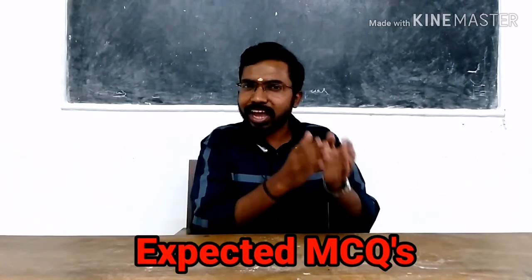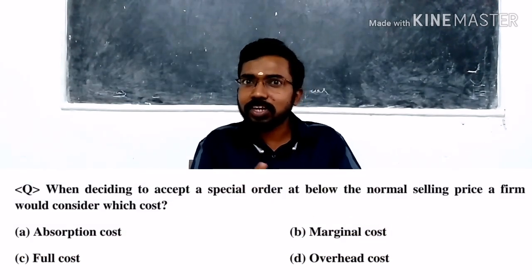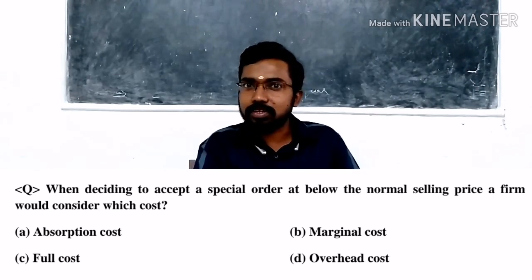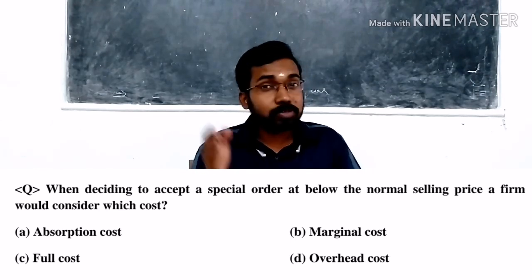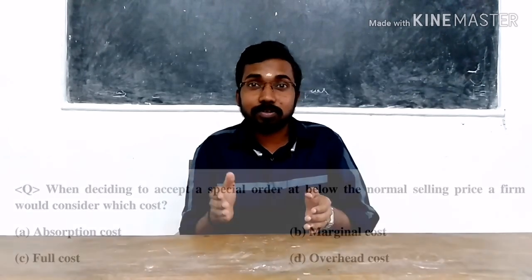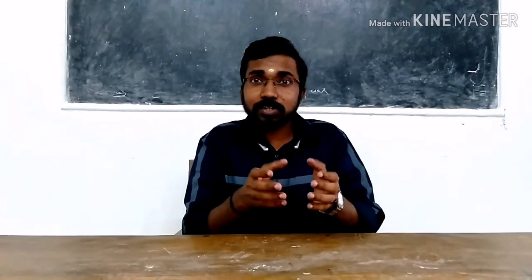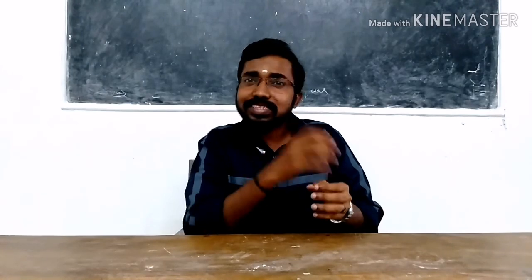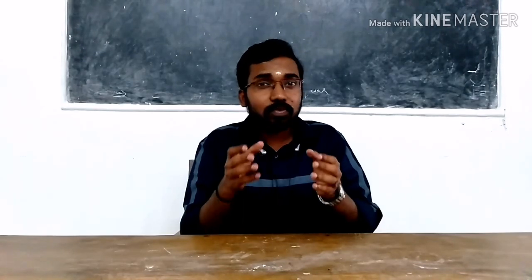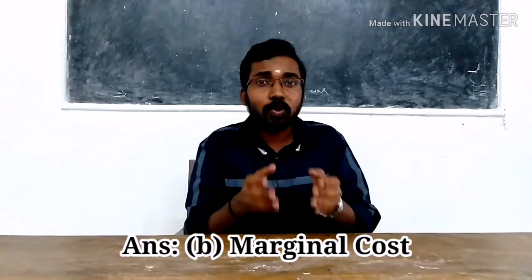Now we go through four important expected MCQs. First question: when deciding to accept a special order at below the normal selling price, a firm would consider which cost? Option one: absorption cost. Option two: marginal cost. Option three: full cost. Option four: overhead cost. As already explained, under the marginal costing technique we consider only marginal cost. So the answer is option B — marginal cost.